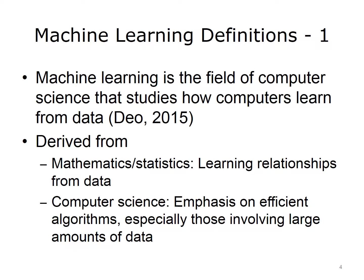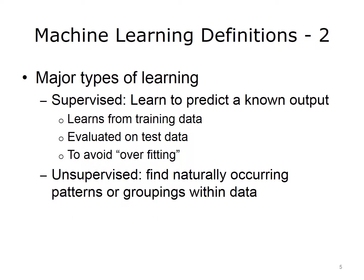There are many definitions of machine learning, but it's commonly described as the field of computer science that studies how computers learn from data. Machine learning is derived from mathematics and statistics, where relationships are learned from data, and from computer science, where there is emphasis on efficient algorithms, especially those involving large amounts of data. In supervised learning, machine learning algorithms learn to predict a known output that they learn from training data and have their effectiveness evaluated on test data.